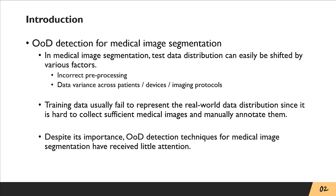In the medical imaging domain, test data distribution can easily be shifted by various factors such as incorrect preprocessing and data variance across patients, devices, and imaging protocols.